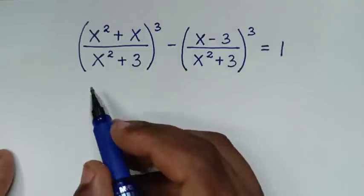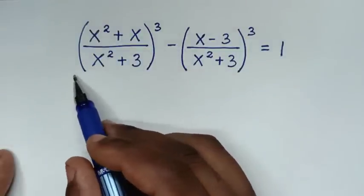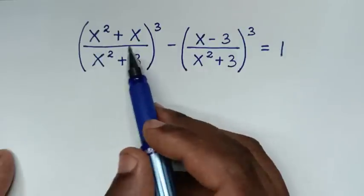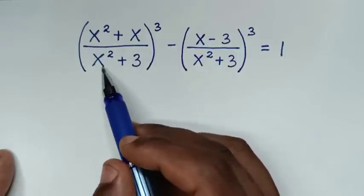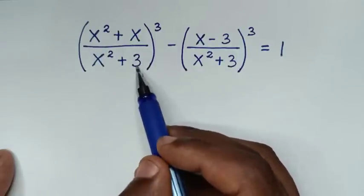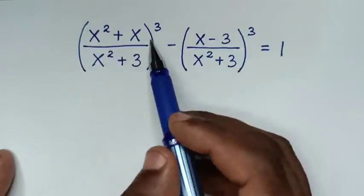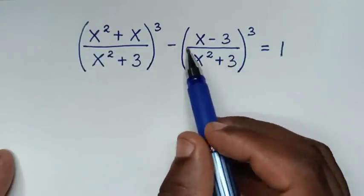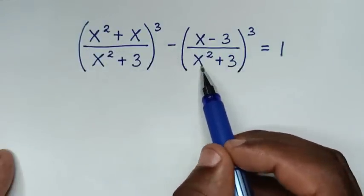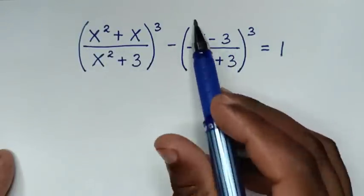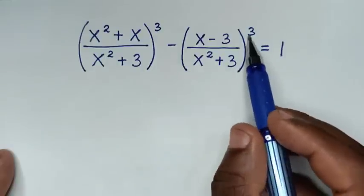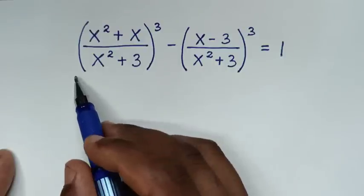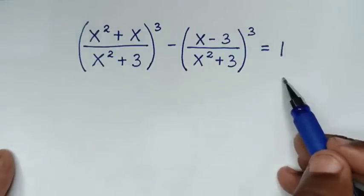Hello, you are welcome to solve this math problem which is (x² + x)/(x² + 3)³ minus (x - 3)/(x² + 3)³ is equal to 1. We need to find the values of x from this equation.